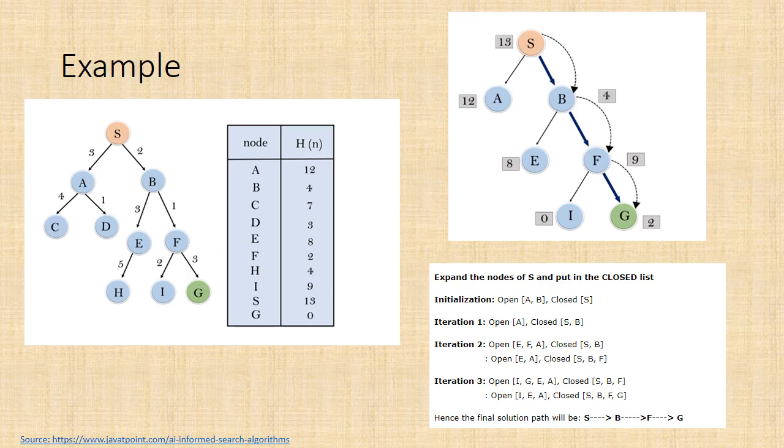Since node F has the lowest value we expand F. Therefore, the open is I, G, E, A. Closed is S, B, F. Repeat this until we reach goal node G.